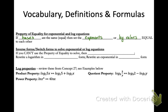The second method is switching forms. If you can't use the property of equality to solve, you're going to rewrite a logarithm in exponential form or rewrite an exponential in log form. Also remember the properties from the last concept: the product property, the quotient property, and the power property. You can go either way — expanding with addition or condensing from addition to multiplication.